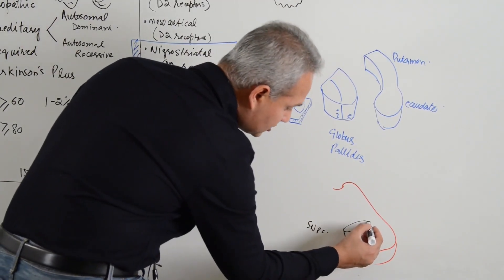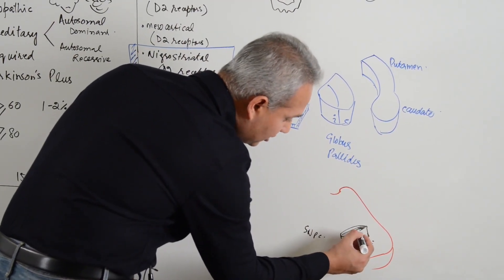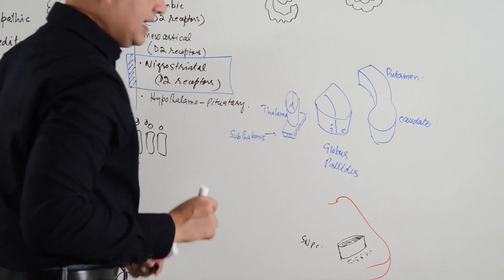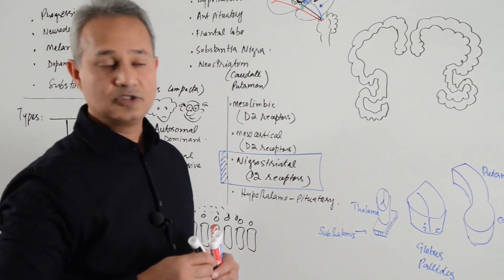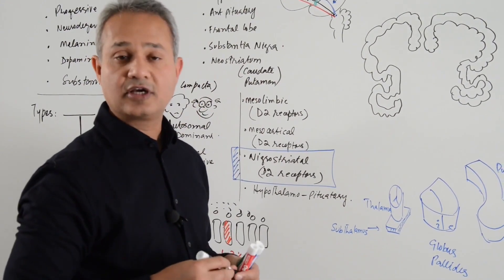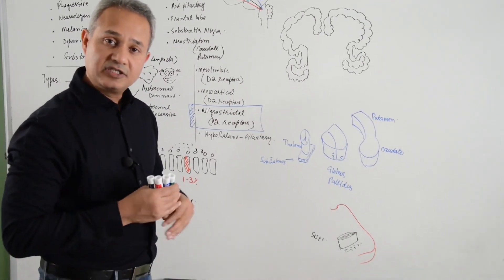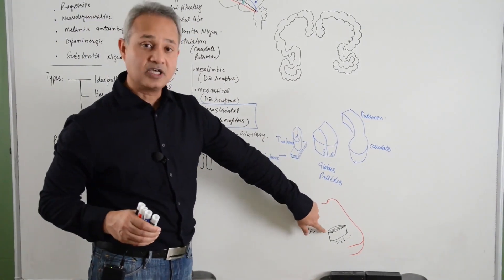In this one, the pars compacta, the anterior part of this has dopaminergic fibers. This is the area which we are talking about. The neurodegeneration or the problem with the neurons occur here.